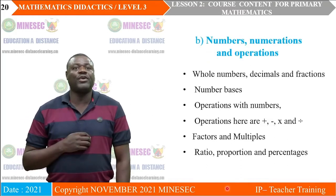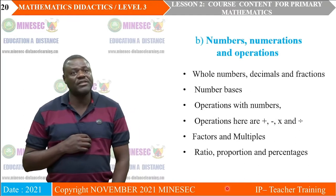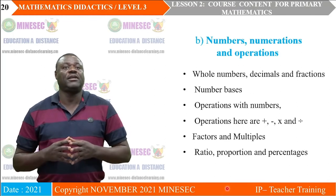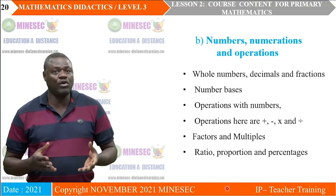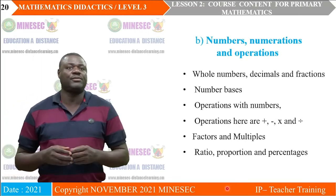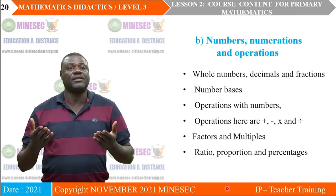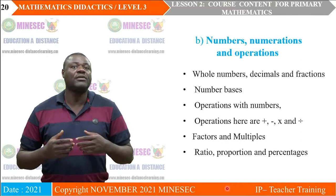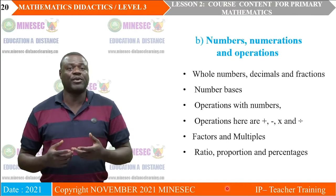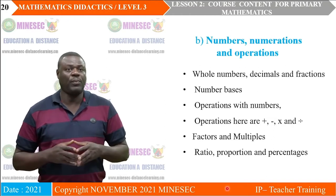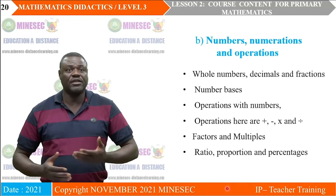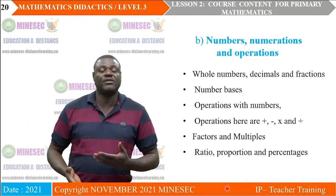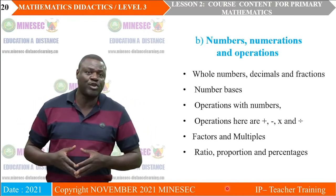The second component has to do with numbers, numerations, and number operations. Here, children learn about numbers — the different types of numbers: whole numbers, decimals, and fractions. They equally learn number bases and carry out calculations using the different operations: addition, subtraction, multiplication, and division. They should also be able to work with numbers to find factors and multiples, and use numbers to calculate ratio, proportion, and percentages.